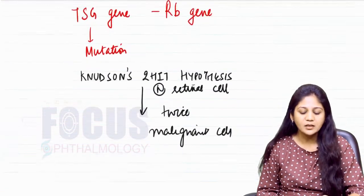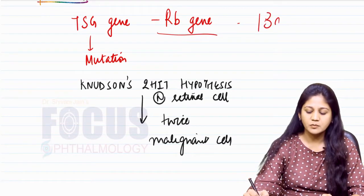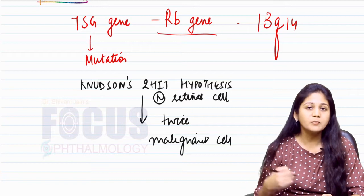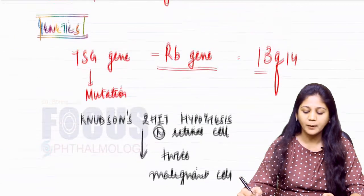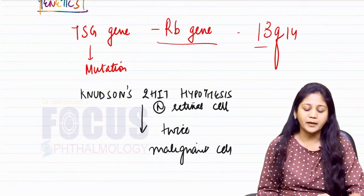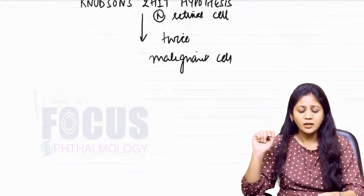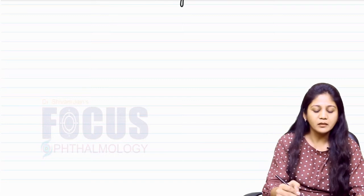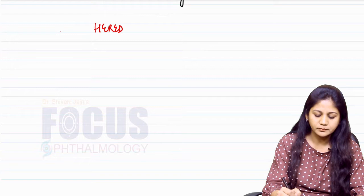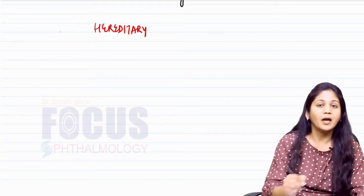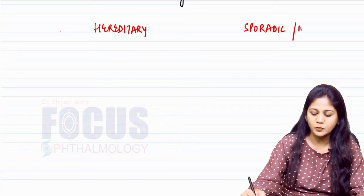The retinoblastoma gene is a tumor suppressor gene present over the long arm of the 14th band of the 13th chromosome — so chromosome 13, long arm, band 14. This gene undergoes mutation twice. Now let's understand what happens in a hereditary tumor versus a sporadic (non-hereditary) tumor.